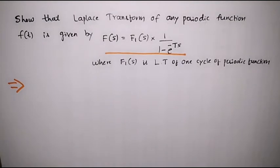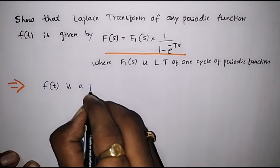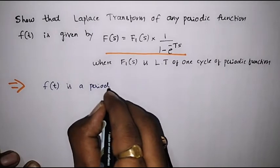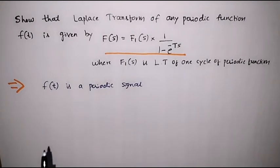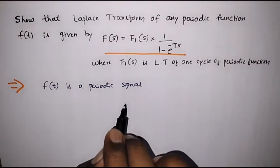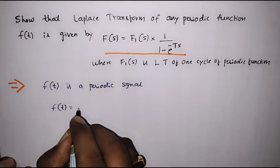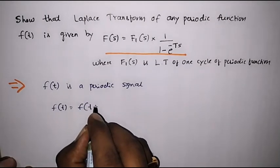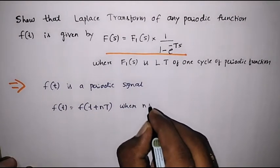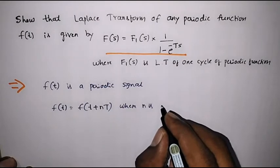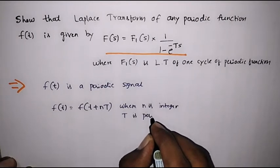Now let us assume that f(t) is a periodic signal. A signal is said to be periodic if it satisfies the condition f(t) = f(t + nT), where n is an integer and T is the period of the signal.